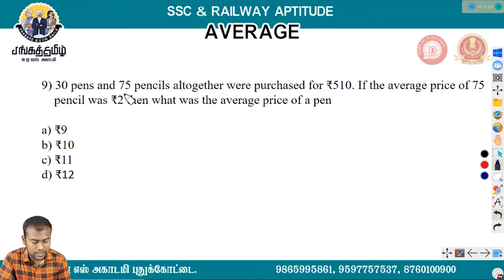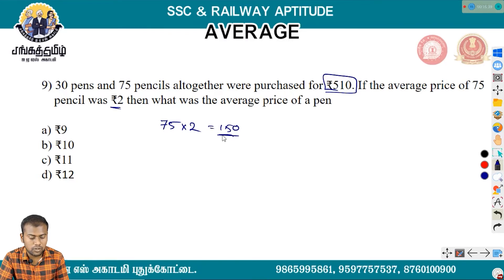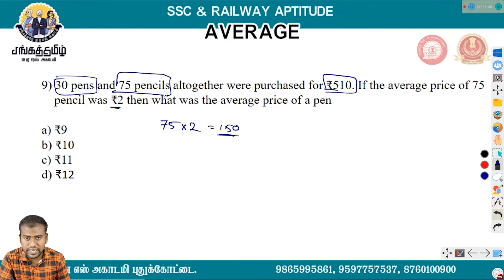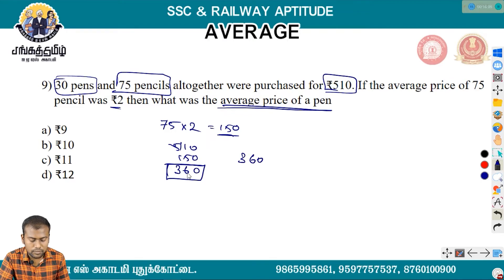30 pens and 75 pencils altogether were purchased for Rs. 510. If the average price of 75 pencils was Rs. 2, then the total cost of pencils is 150. So the total cost of 30 pens is 510 minus 150 equals 360.